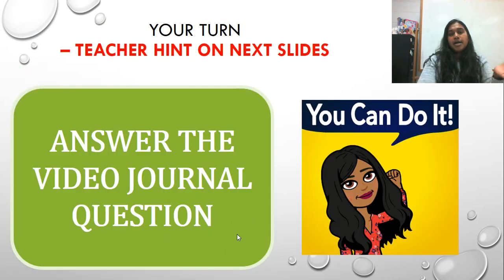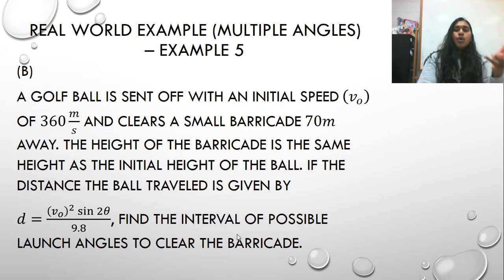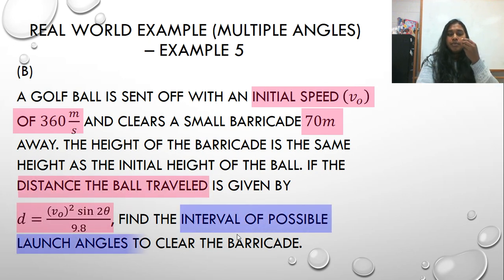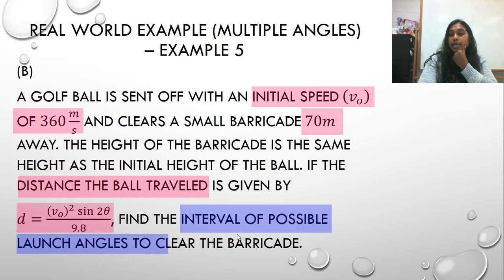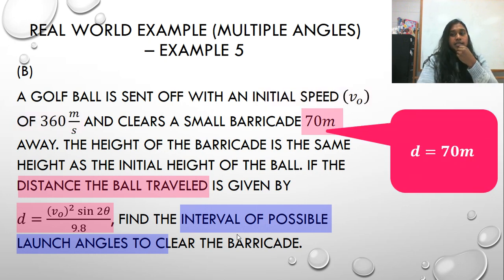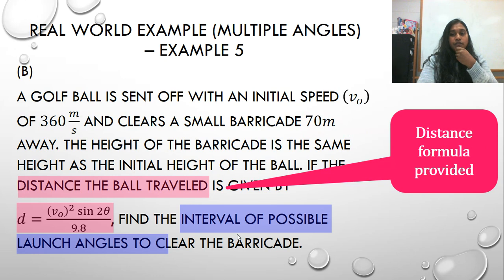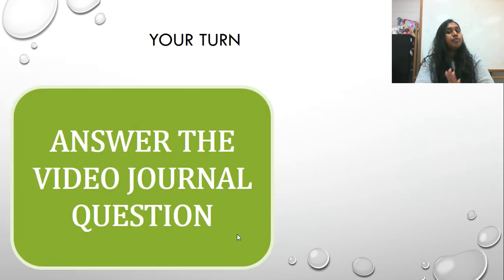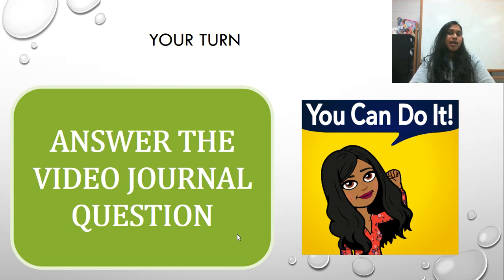This is your question to try, but I do have two hints. So here is the question you have. Let's highlight it together. What's the important information? So initial speed, the barricade is 70 meters away. Distance is given by this formula, and I want to know the possible launch angle to clear the barricade. So again, this is V naught. This is your distance. This is your formula, and you're solving for the angle. So I've helped break it down. Can you finish that question?